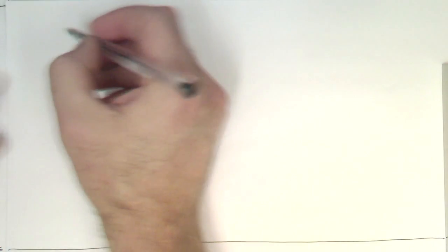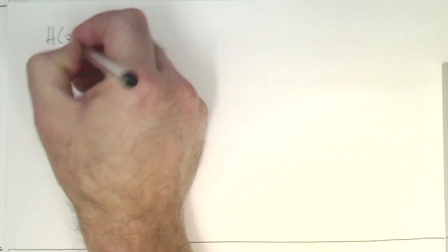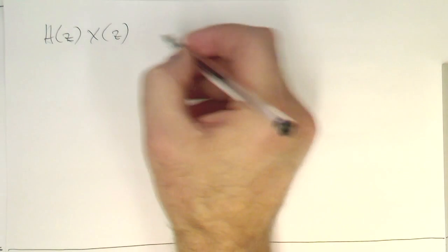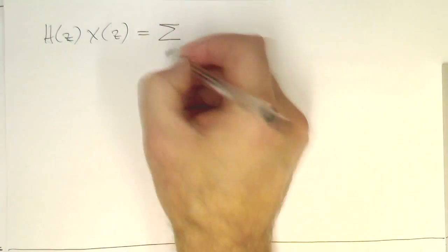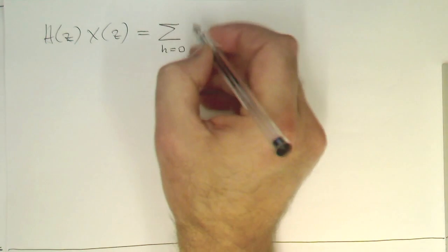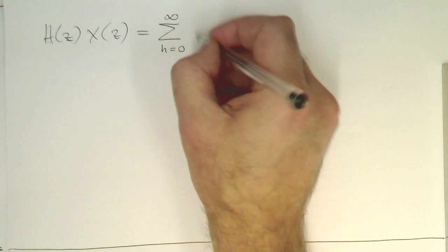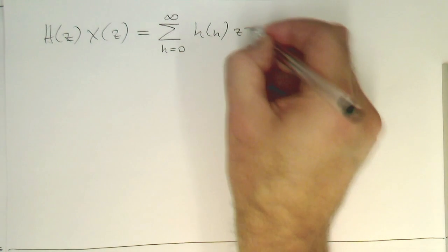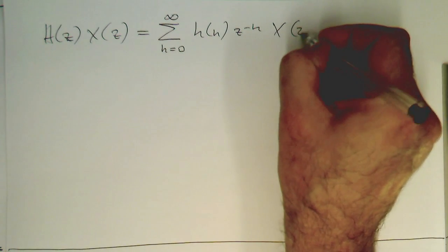Let's just write this here again down here, because it's very important. So H(z) multiplied by X(z), and then this is sum n equals zero to infinity, and then this is here H(n), and then this is z to minus n, and then this is X(z).